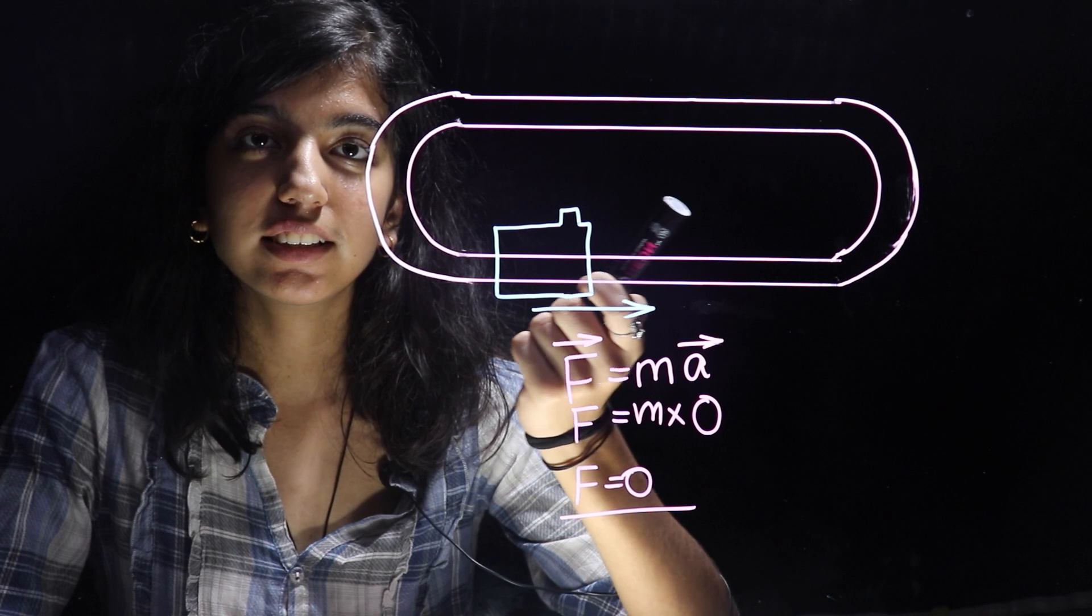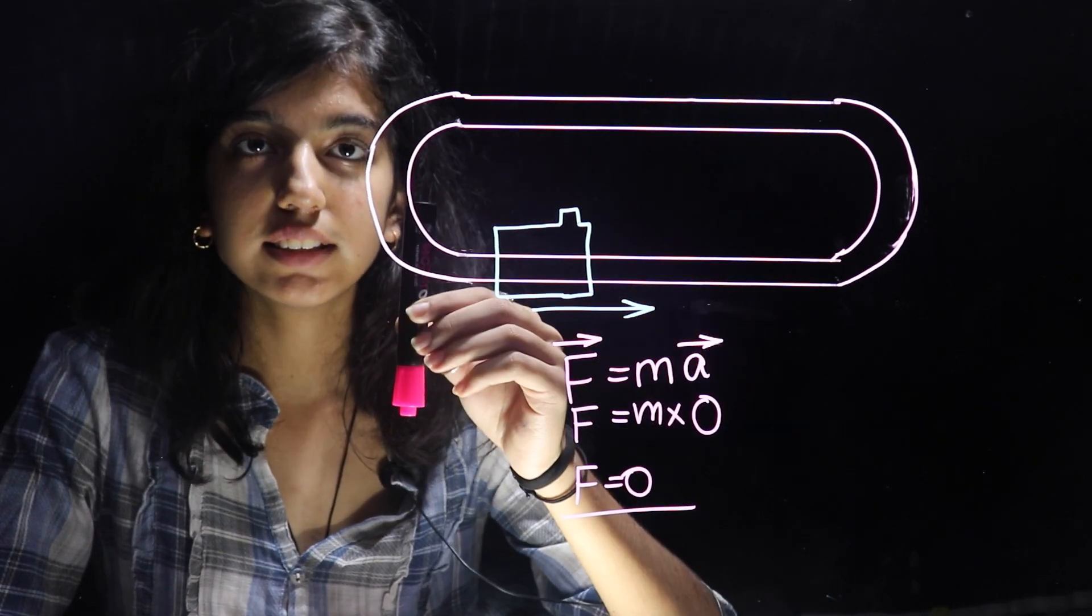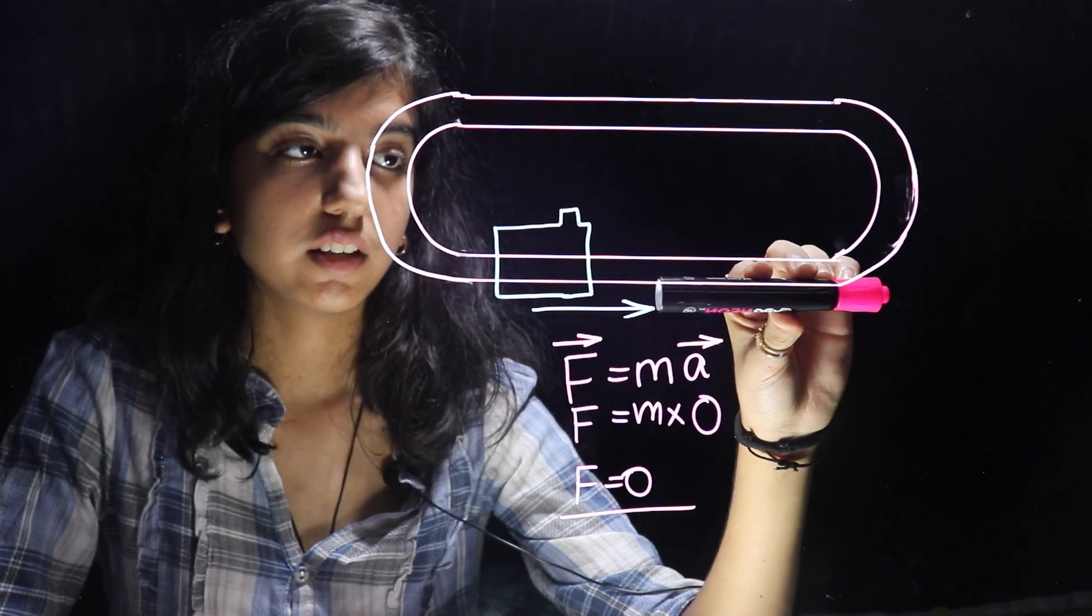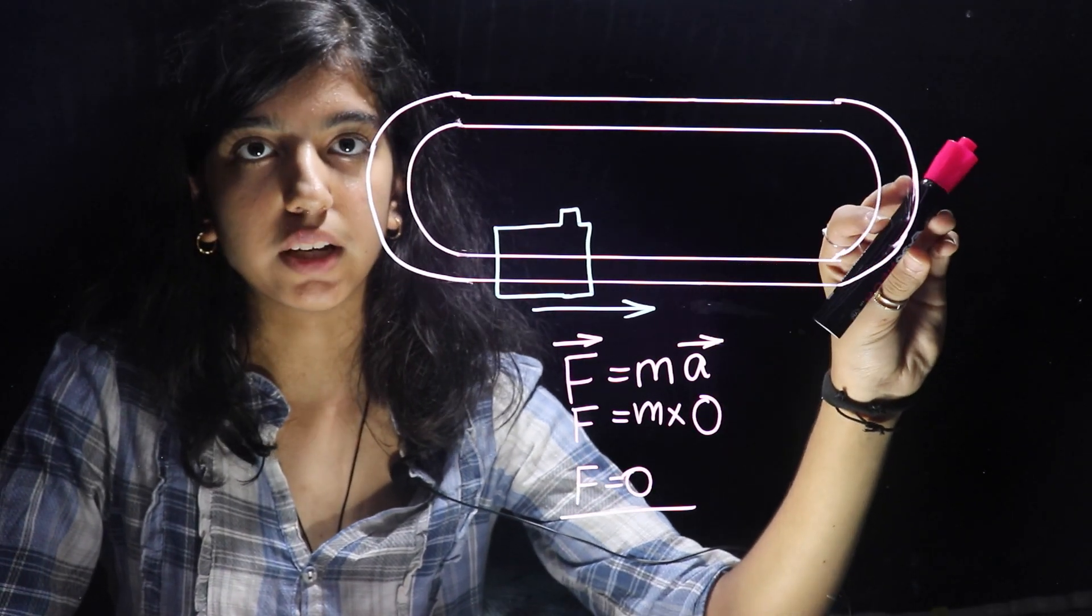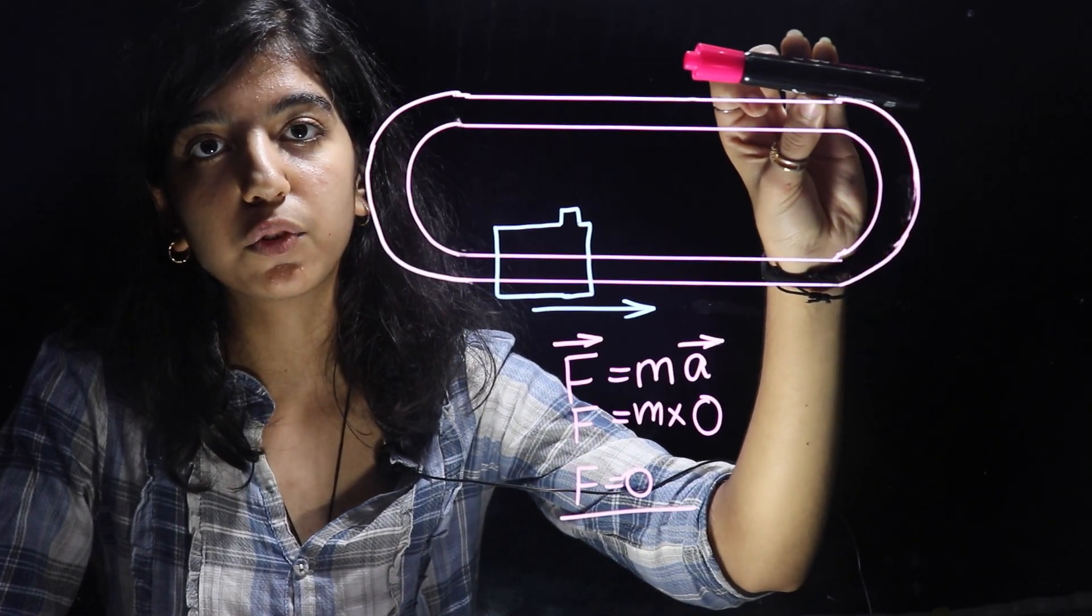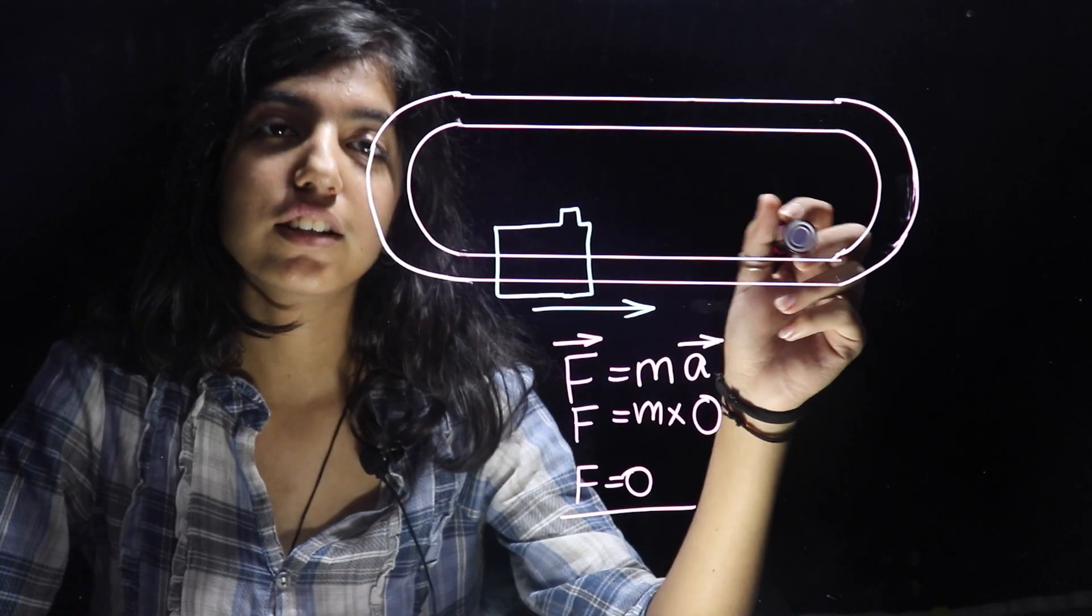Now let's consider the curved path of the track. Taking this as the train, it initially moves towards the right side. But as it takes the curved path, the direction of motion is continuously changing, and then it finally moves towards the left side.